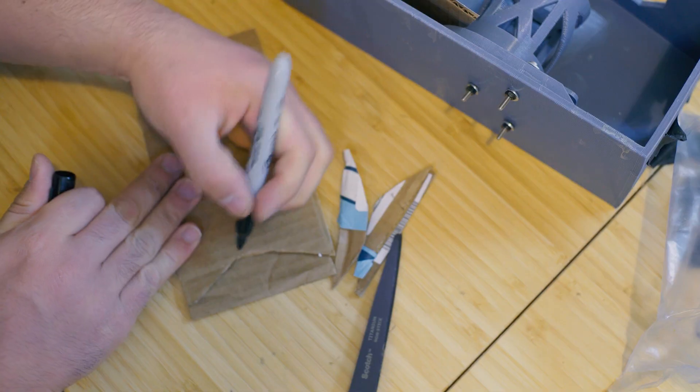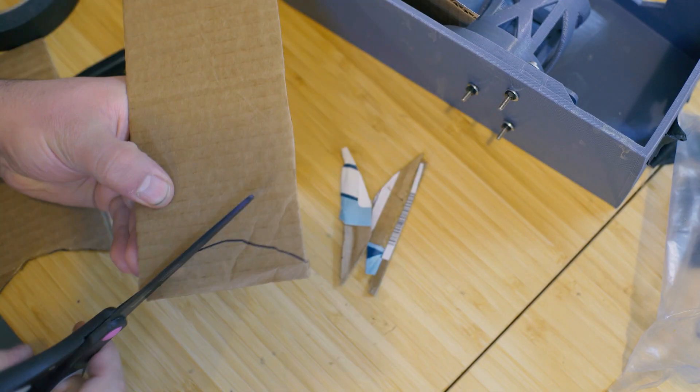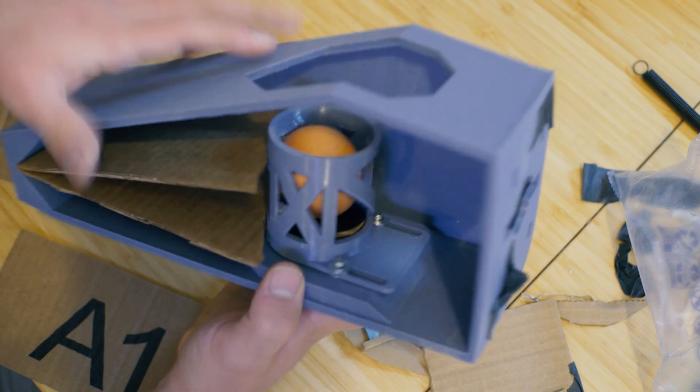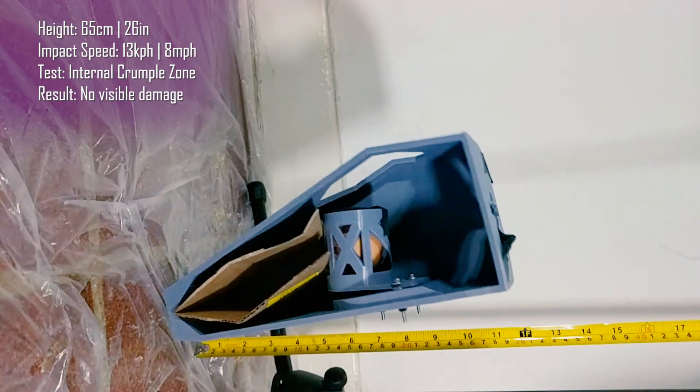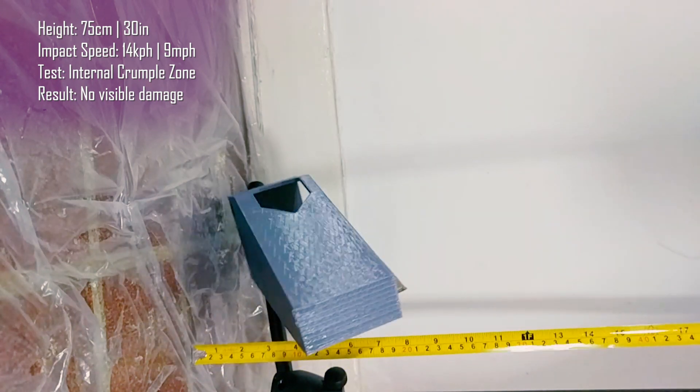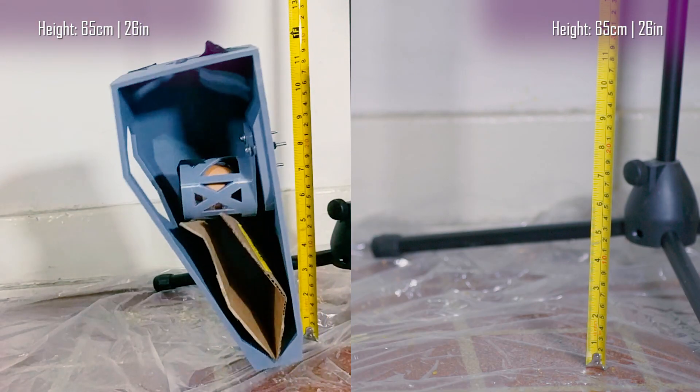After that it was time to use the crumple zone. To simulate that I made cardboard cutouts and placed them in between the cabin and the front of the body, and this was even a better dampening method. You can see the cardboard just crumples and absorbs the energy, whereas the spring bounces back.